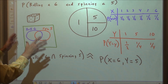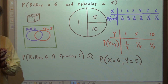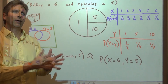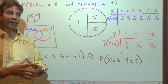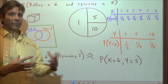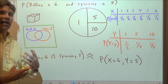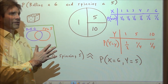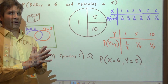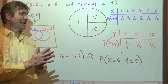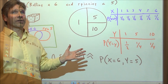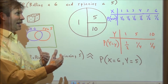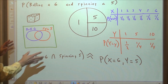When it comes to joint distributions, arguably the most important concept is independence — are the two random variables independent of each other? If they are, there's a lot of information and probabilities we can calculate. If we cannot determine independence, then a lot of times we end the problem stating that we're not sure.